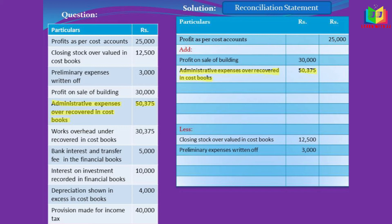The next item is administrative expenses over-recovered in cost book. It is clearly stated that this is an expense and it is over-recovered. Expenses over-recovered will reduce the profit, so in order to rectify that, we have to add it.